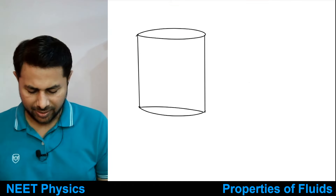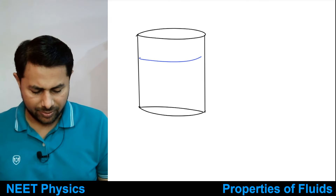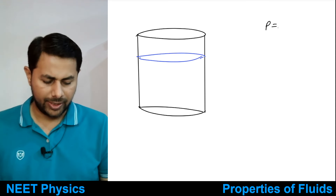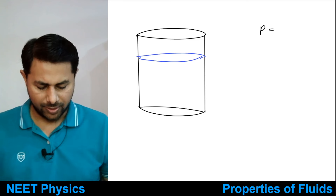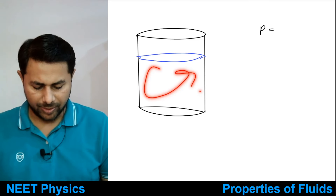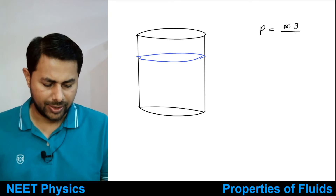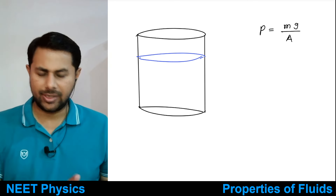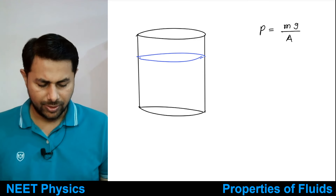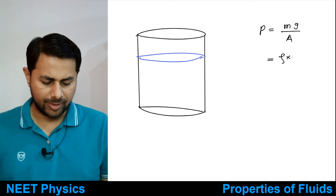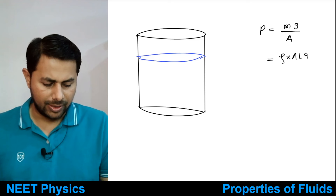Suppose you have this container and it is filled with some liquid. Pressure is equal to force upon area. Force is equal to weight of the liquid, and weight is m times g. So pressure is m times g divided by area. Mass is density into volume, so density multiplied by area times length of the liquid column, times g, divided by area.